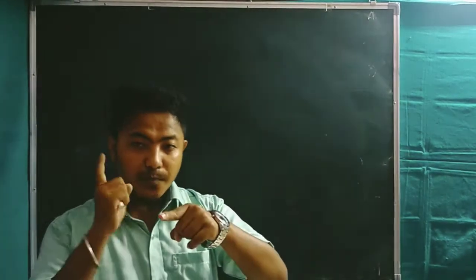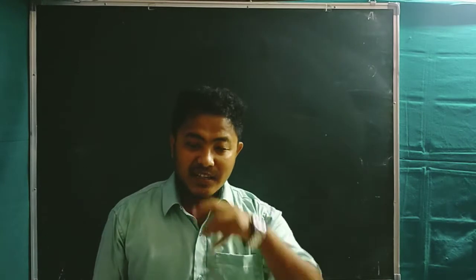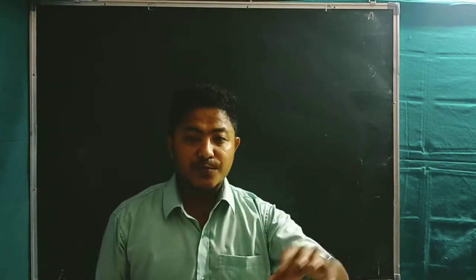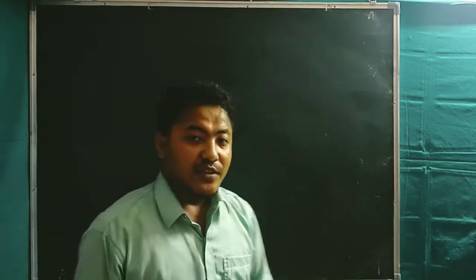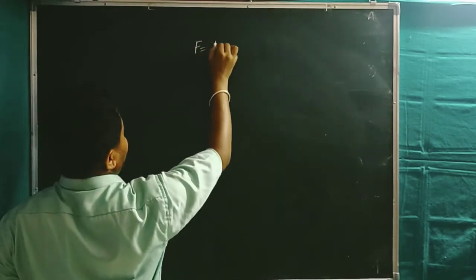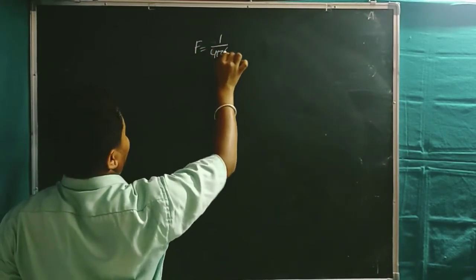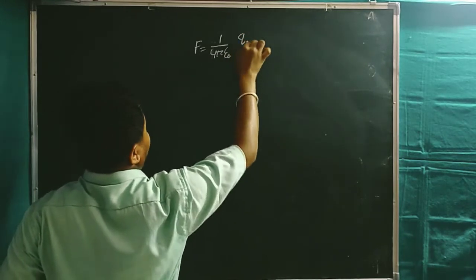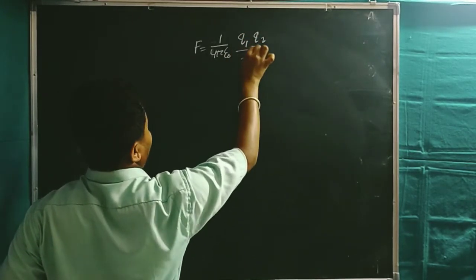The electrostatic force is directly proportional to the product of the charges and inversely proportional to the square of the distance between them. We found the expression: F = (1 / 4πε₀) · q1·q2 / r².